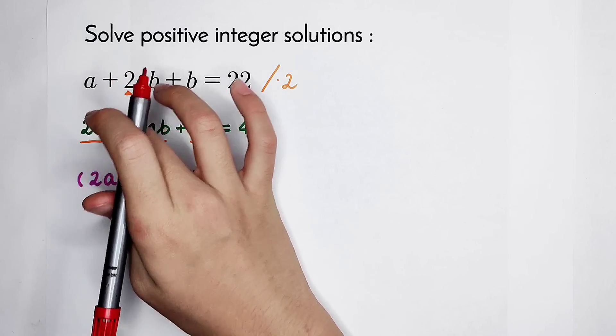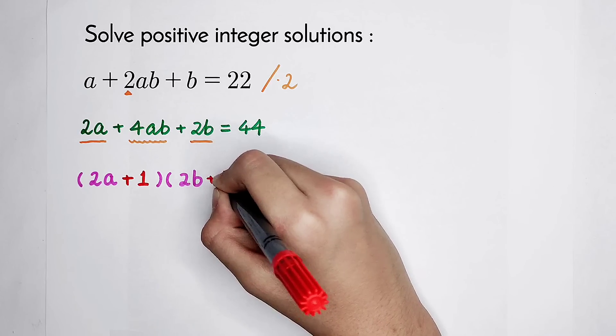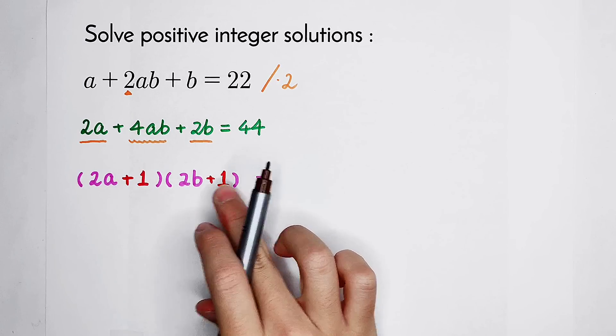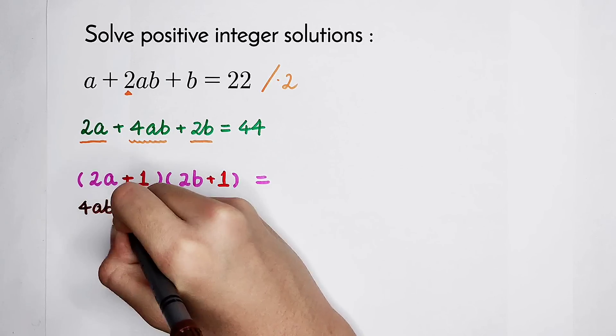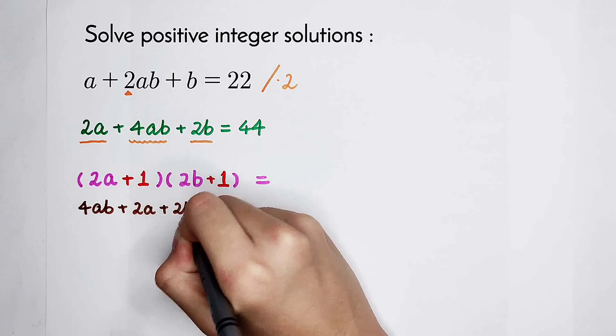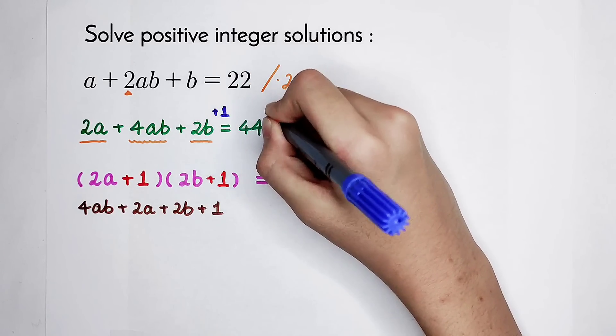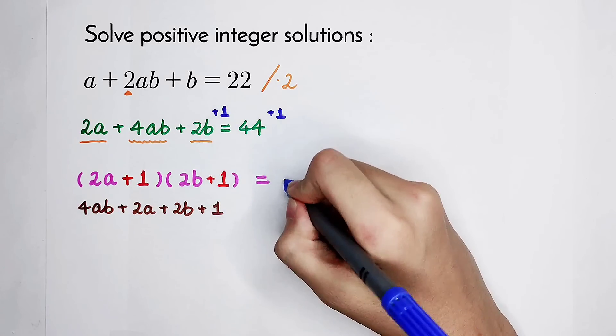And the coefficient of 2a, not a, 2a is also 1. Plus 1 in the term of 2b. If you calculate the product of these two terms, you can get 2a times 2b is 4ab. We have. And then plus 2a, we have. 2b. We have. But there is a number that we lacked: 1. So that means, we are going to add 1 on the both sides.